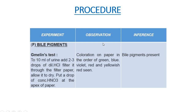The next test is for bile pigments, and we perform Gmelin's test. To 10 ml of urine sample we add 2 to 3 drops of dilute hydrochloric acid, filter it through filter paper and allow it to dry. Then we put a drop of concentrated nitric acid at the apex of the paper. We observe coloration on the paper in the order of green, blue, violet, red, and yellowish red. If we observe this color change, then there is a presence of bile pigments in the urine sample.